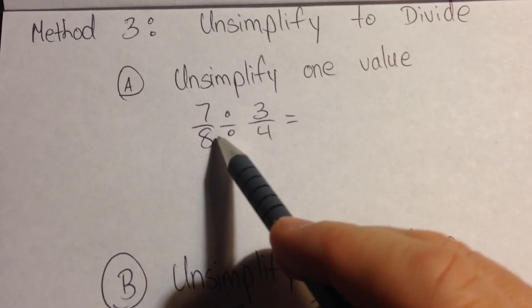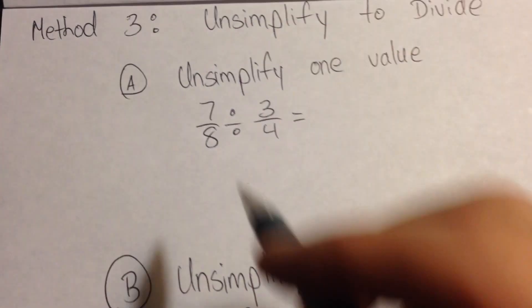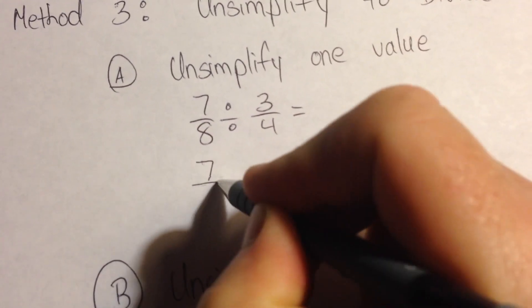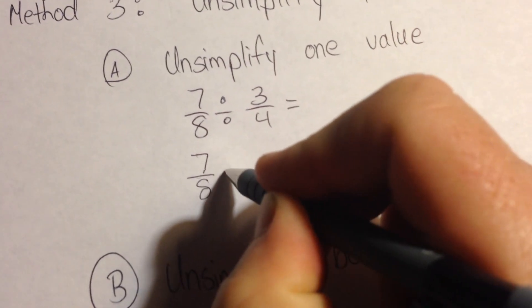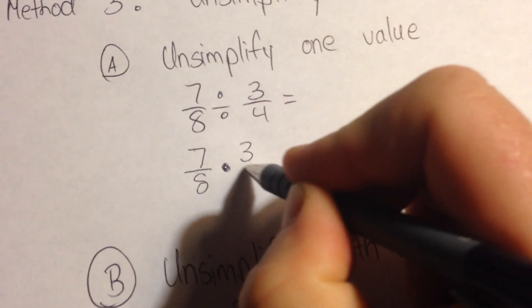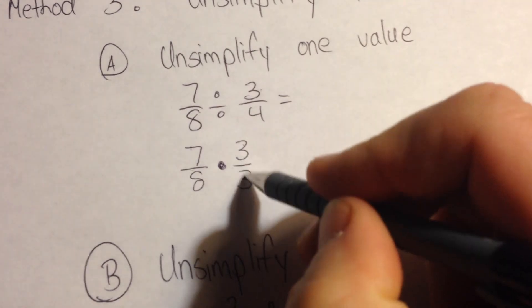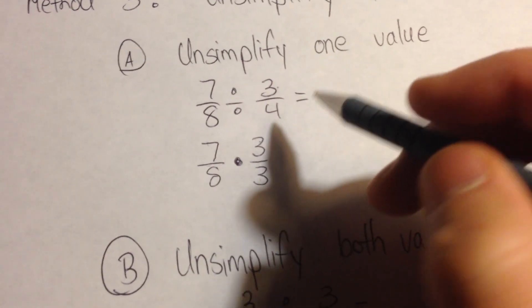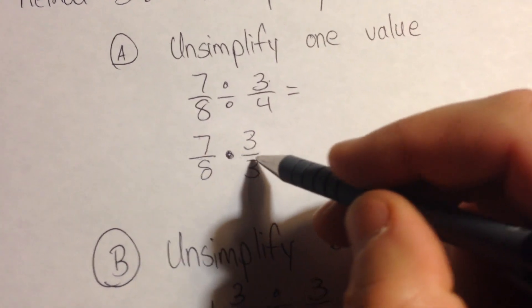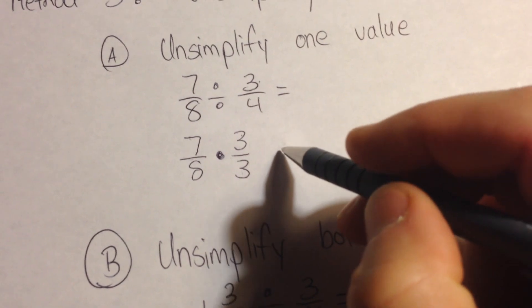And it looks something like this. Since we cannot divide by 3, what we'd actually do is take our dividend, 7 eighths, and we're going to multiply it by 3 over 3. Since we couldn't divide by 3, we're going to multiply by 3 over 3. 3 over 3 is simply multiplying by 1, so it's not really going to change. It's going to give us an equivalent fraction, but it's not really going to change the values we're actually dividing by.